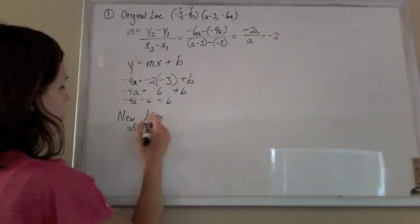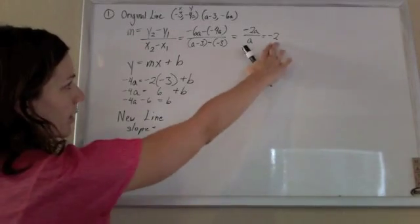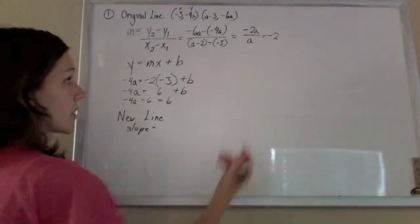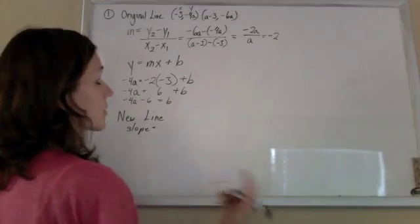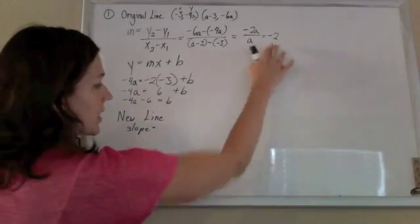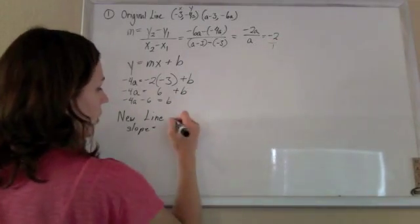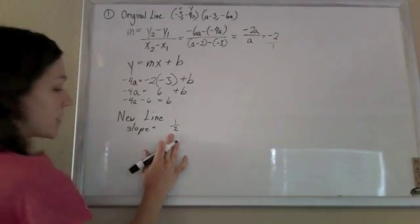Well, our slope is going to be the opposite reciprocal of this slope, because they said they were perpendicular, and perpendicular lines have opposite reciprocal slopes. So we'll take this negative 2. Think of it as 2 over 1. So flip it over, 1 half. And since that's negative, this will be positive.